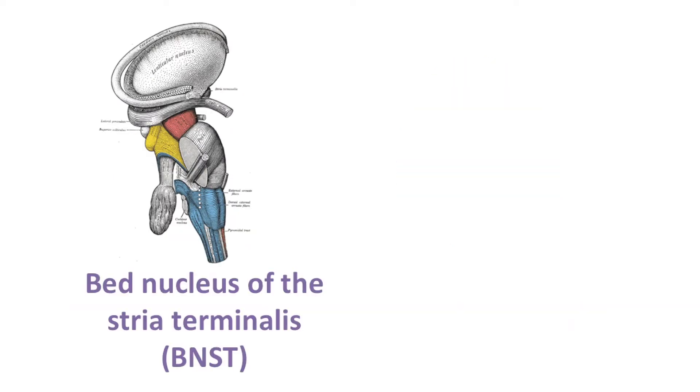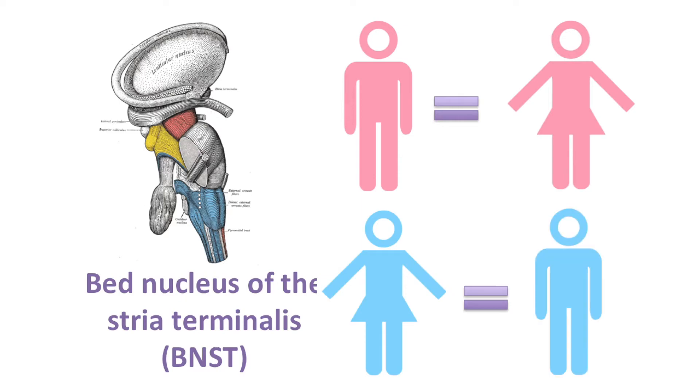A brain area called the bed nucleus of the stria terminalis, or BNST, is thought to be different between biological males and females. Studies have found that trans females' BNSTs are more similar to cis females and trans males' BNSTs are more similar to cis males. It seems like people's brains look more like their preferred gender than their assigned sex.